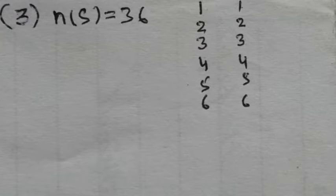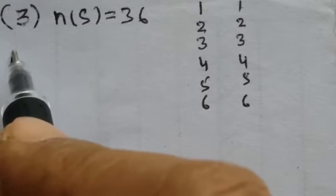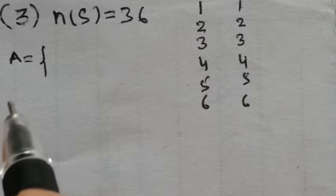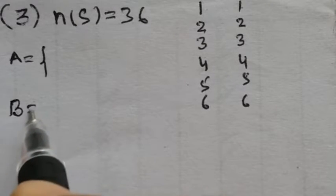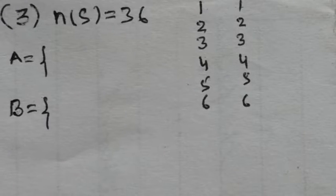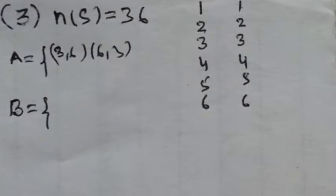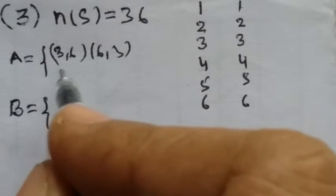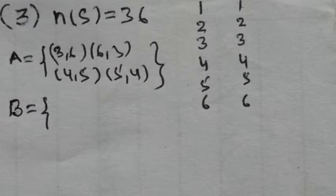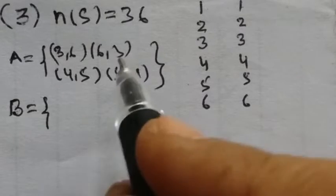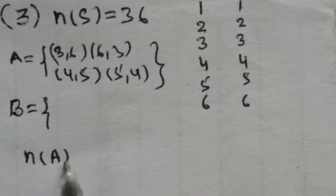Now, what is the probability of obtaining a total of 9 or 11? For event A (sum = 9), the favorable combinations are: (3,6), (6,3), (5,4), and (4,5). Note that 7 cannot appear on a die, so there are no other combinations. Therefore, event A has 4 favorable outcomes.